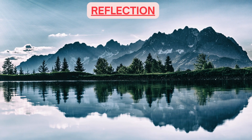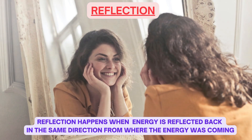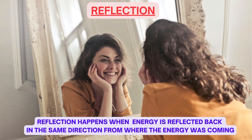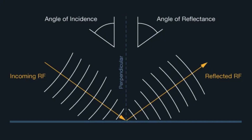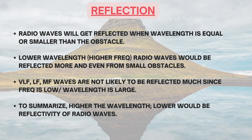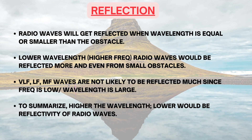Reflection. Reflection happens when a part of energy is reflected back in the same direction from where the energy was coming. You see reflection in a mirror, in glass and on a water surface. Radio waves also get reflected back towards the source if they encounter an obstacle or reflecting surface. But reflection does not happen always with all frequencies — radio waves get reflected when the wavelength is equal to or smaller than the obstacle. So lower wavelength or higher frequency radio waves would be reflected more and even from small obstacles. This implies that VLF, LF and MF waves are not likely to be reflected much since their frequency is low and wavelength is large. To summarize: higher the wavelength, lower would be the reflectivity of radio waves.